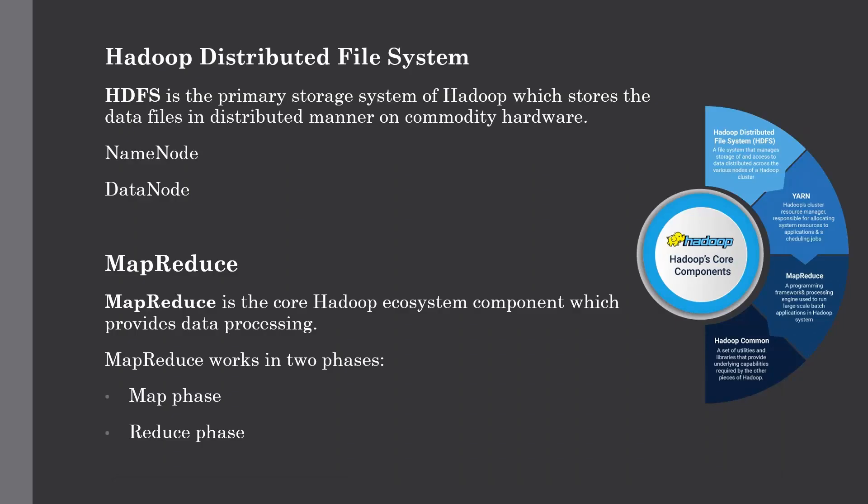Let's start with the most important component of Hadoop which is HDFS — Hadoop Distributed File System. HDFS is the primary storage system of Hadoop which stores data in a distributed manner on commodity hardware which can be easily replaced. We have already discussed how HDFS works and how it stores data by dividing it into equal blocks and storing it in a distributed manner.